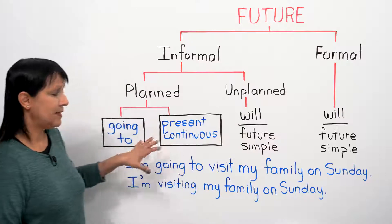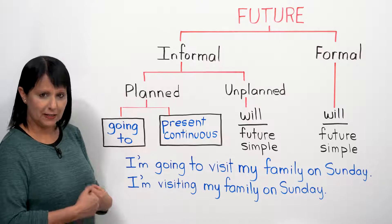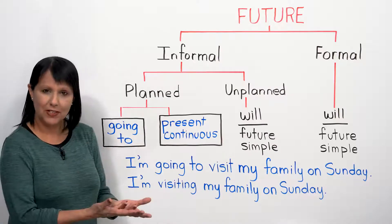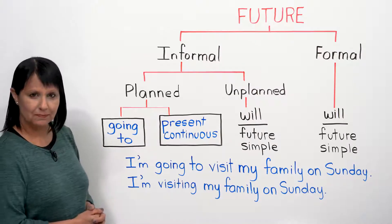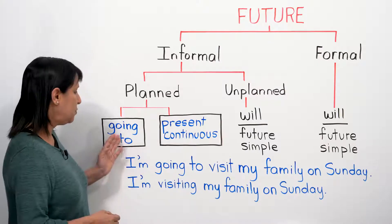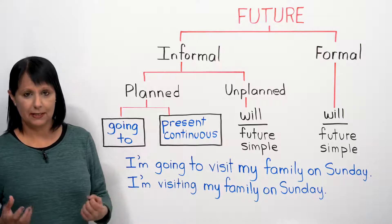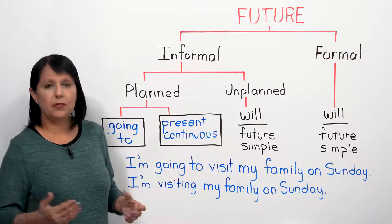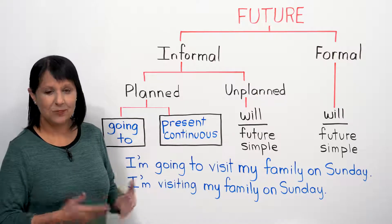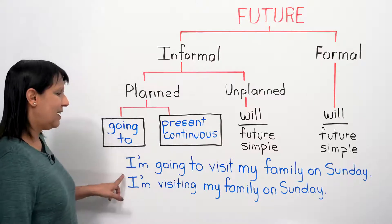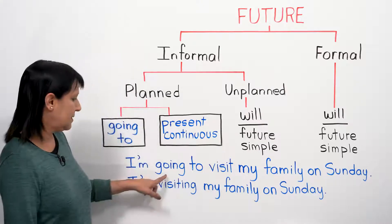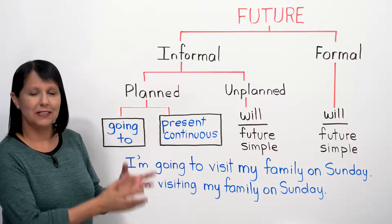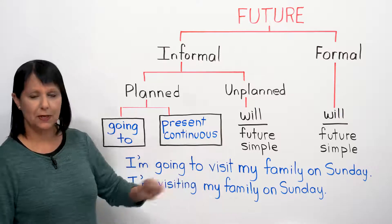In this class, we're focusing on planned situations. If you know in advance that you're going to do something - tomorrow, this weekend, next month, next year - that's planned, and you have two options. Let's imagine somebody asks you, 'What are you planning to do on Sunday?' Because you already have the plan, you might say, 'I'm going to visit my family on Sunday.' You told your family, they're making dinner, everybody's expecting you - this is a plan you know in advance.